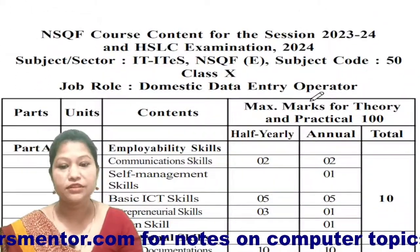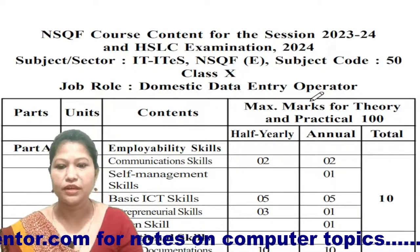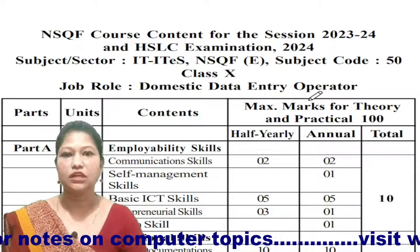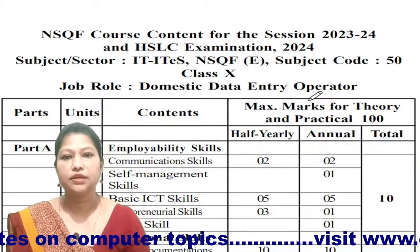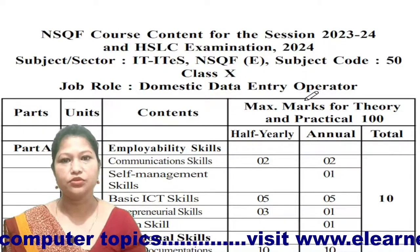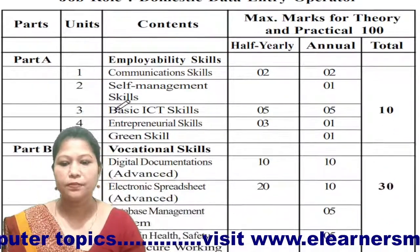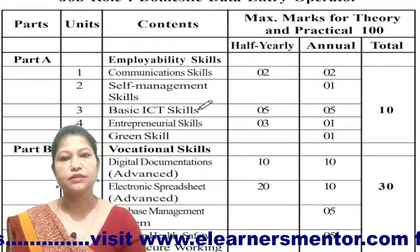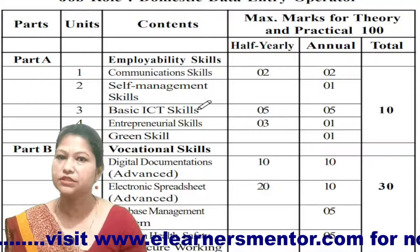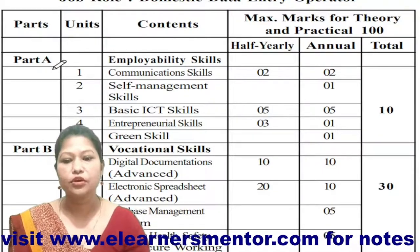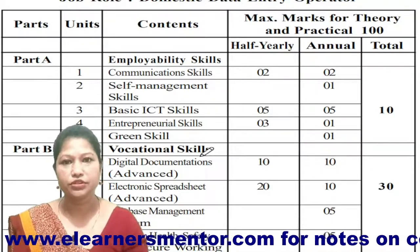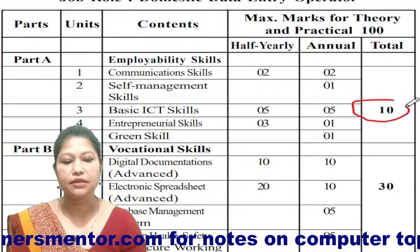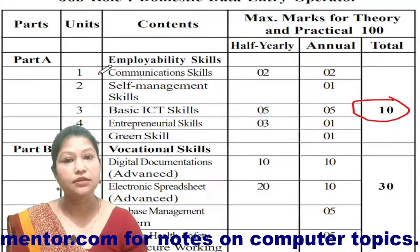This is the course content for the session 2023-2024 and HSLC examination 2024. You will have a half-year exam. There are two parts: Part A and Part B, and you will have different books. The Employability Skills book is Part A, and Part B is the Vocational Skills book. You will have a total of 10 marks in each book.